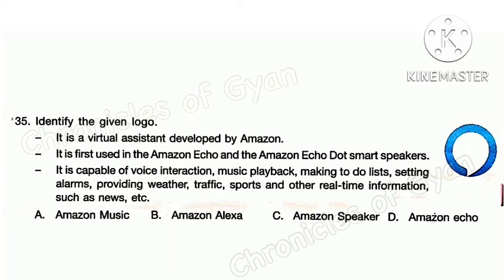Question 35. Identify the given logo. Hints: it is a virtual assistant developed by Amazon, first used in the Amazon Echo and Amazon Echo Dot smart speakers. It is capable of voice interaction, music playback, making to-do lists, setting alarms, and providing weather, traffic, sports, and other real-time information such as news. This is the logo of Amazon Alexa, initially released in 2014. Alexa is a virtual assistant technology largely based on a Polish speech synthesizer named Evona. Correct answer is option B: Amazon Alexa.